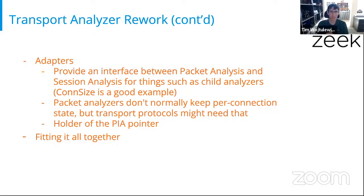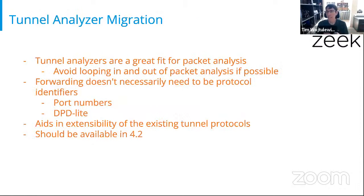Fitting it all together, UDP, TCP, and ICMP now live in packet analysis. No performance problems were found in this, and no extra memory usage. It actually ends up making life a bit easier inside the code. From there we move into tunnel analysis. As I mentioned earlier, it was strange to loop out of packet analysis to deal with tunnels and then go back into packet analysis, because tunnel analyzers are really just another header. There's no session tracking or anything really associated with them. You don't really care about the tunnel itself — you more care about what's inside of it. So those are moving.